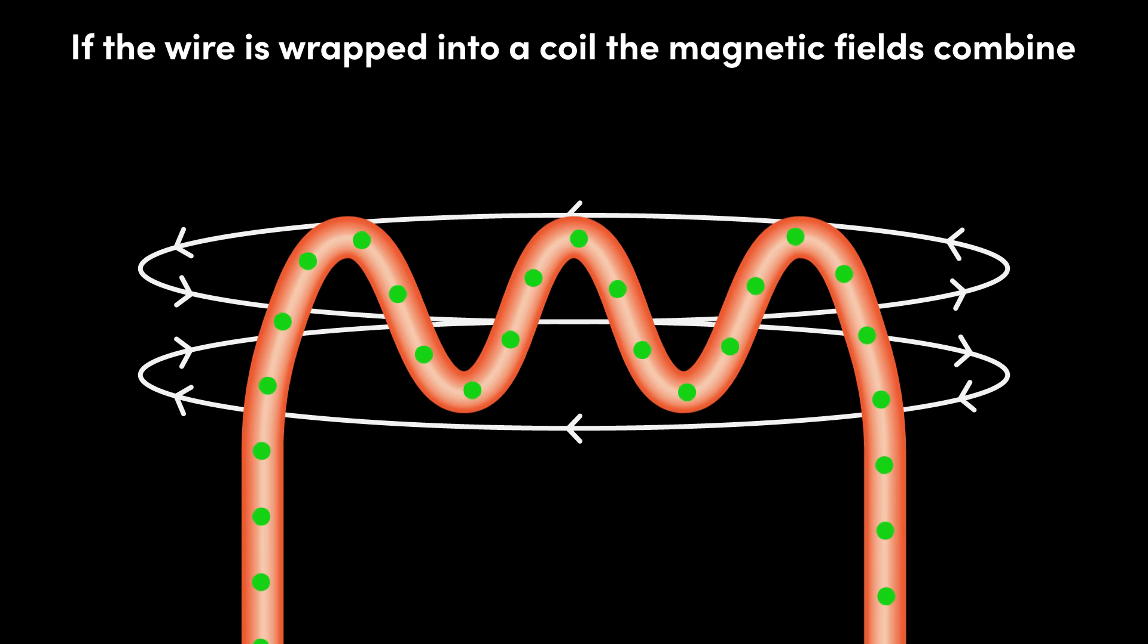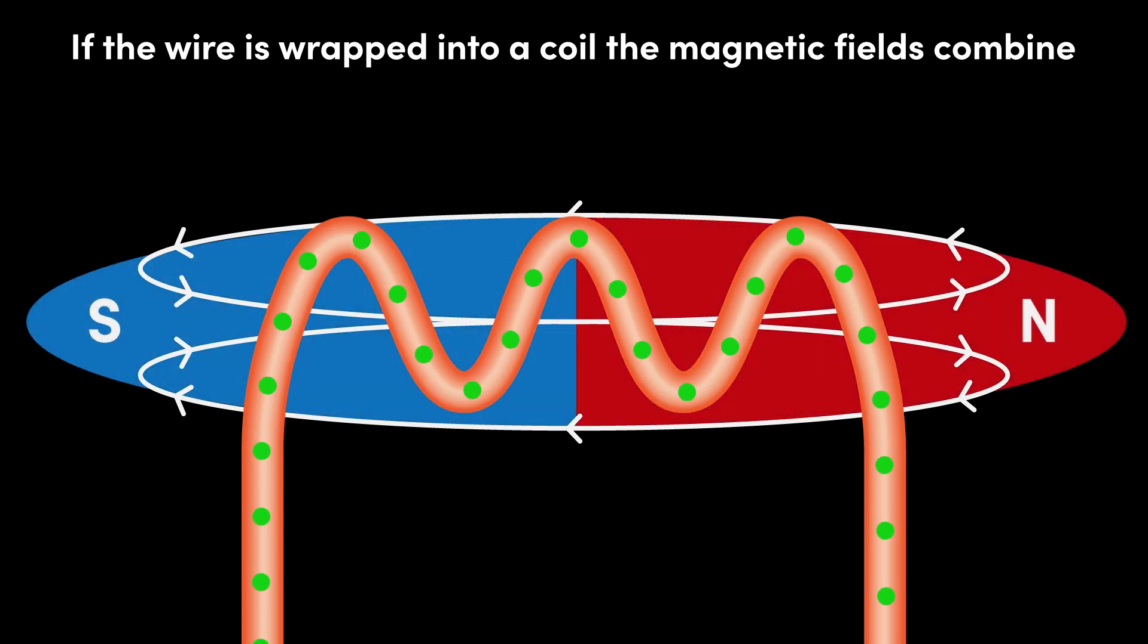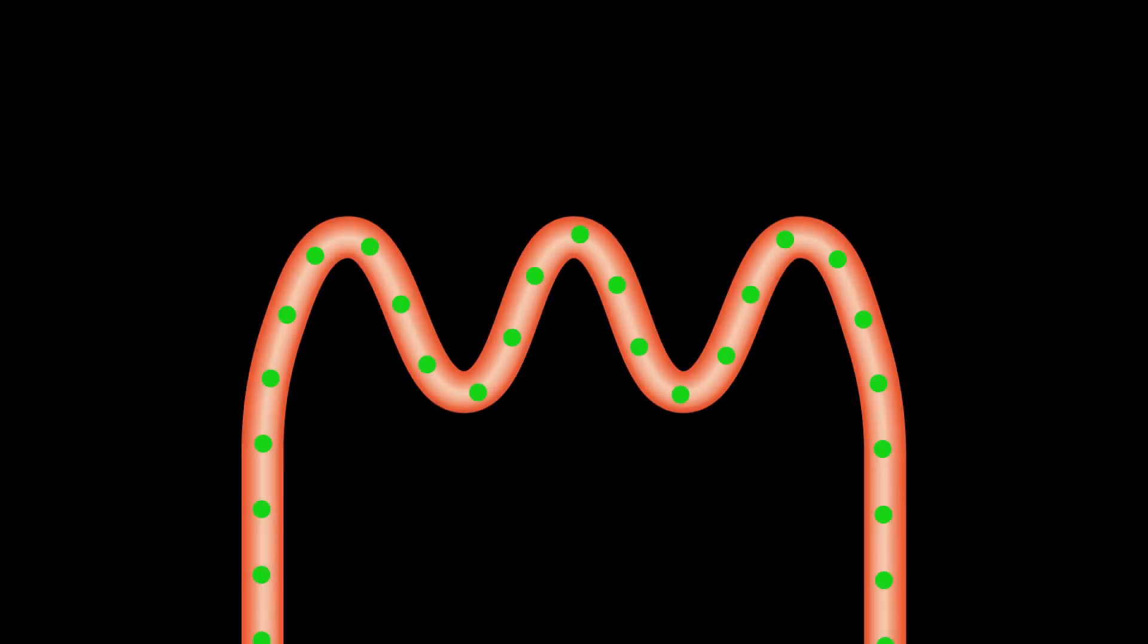This is an electromagnet, which has a north pole and a south pole, just like a permanent magnet. In addition to generating a magnetic field from an electric current, we can also do the opposite. We can generate an electric current from a magnetic field.